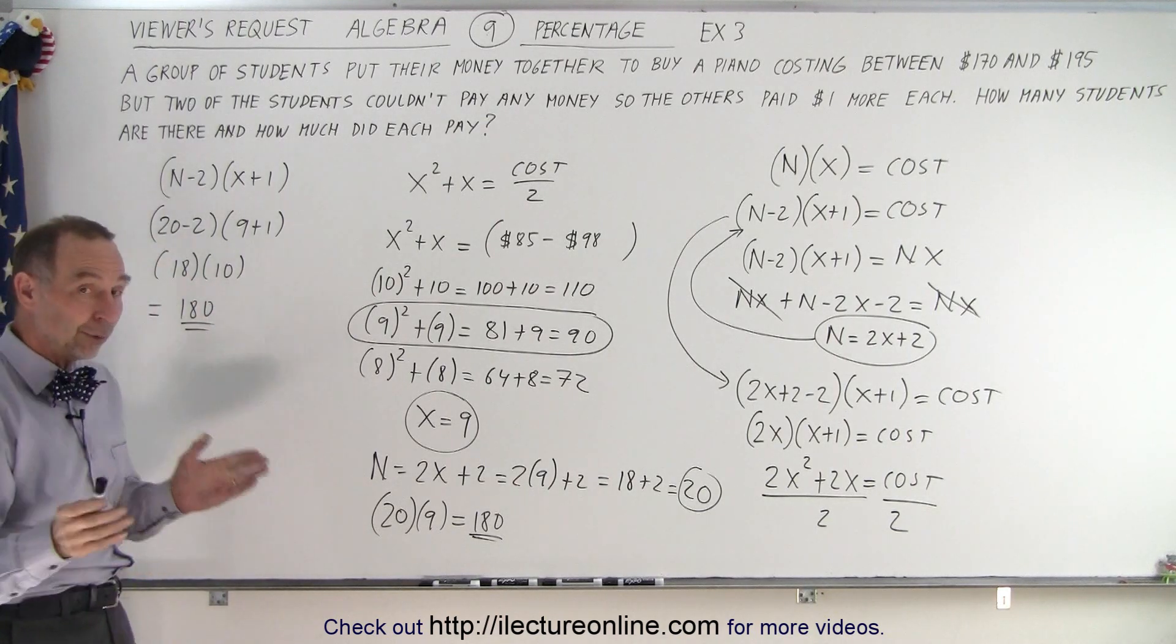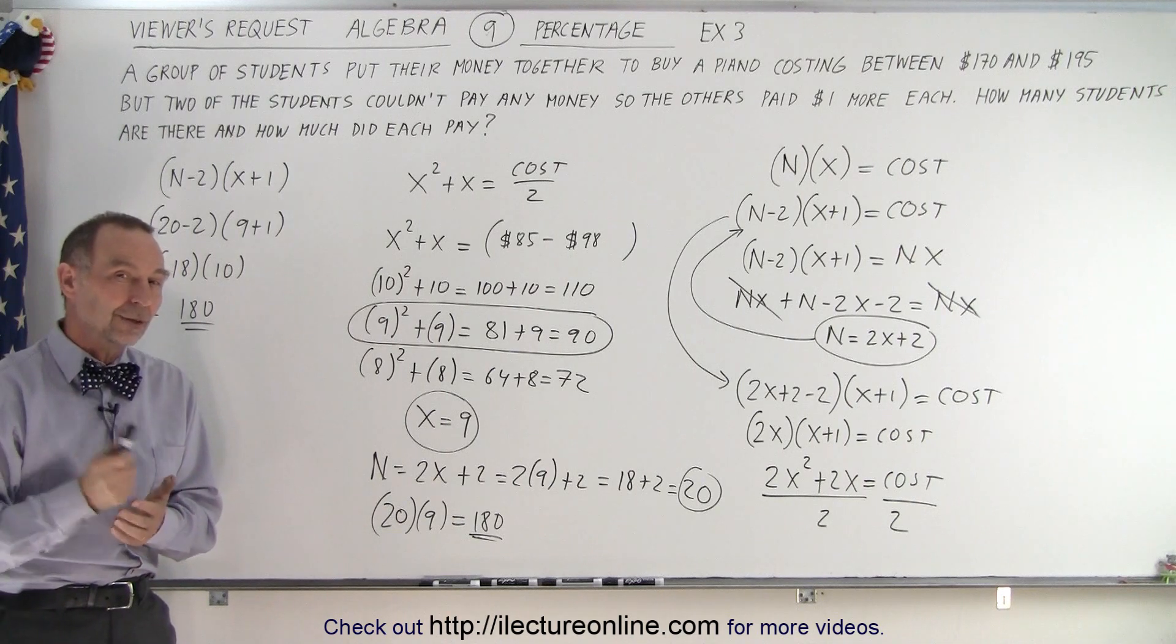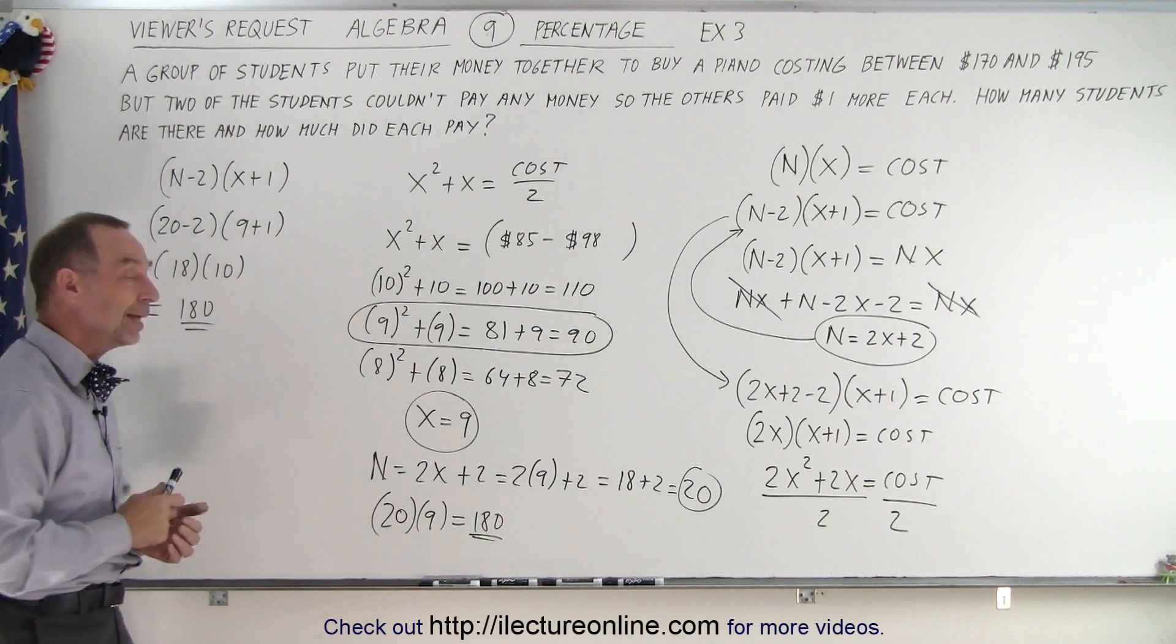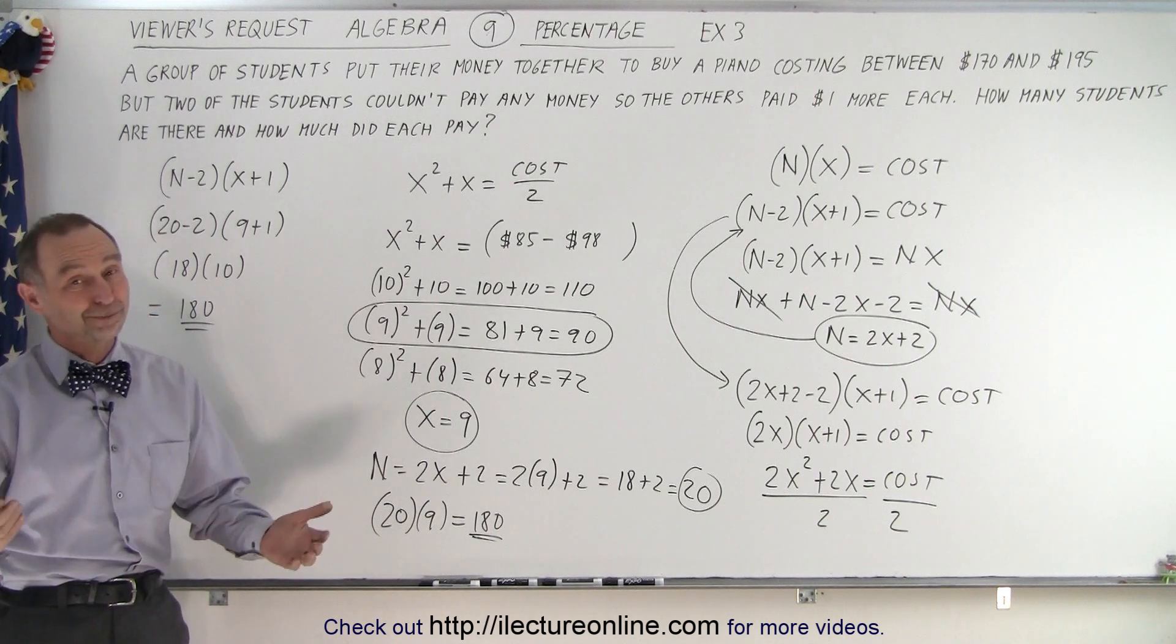And so the answer is originally there were 20 students and they're each going to pay $9, so we end up with 18 students each paying $10, and that is how it's done.